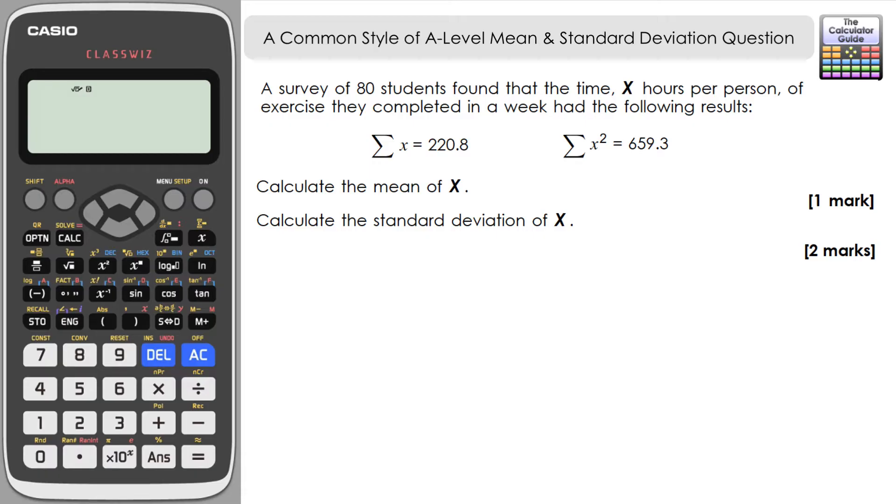What's becoming increasingly common in A-Level maths is this style of question where you are already given some of the summary statistics, such as the sum of x and the sum of x squared, and then asked to calculate the mean and standard deviation using those.